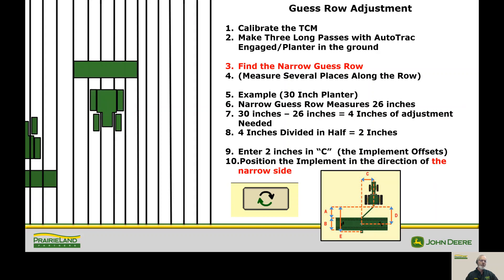Long passes. Passes that are long enough to where the auto track will stabilize. Once you've done that, what I want you to do is to have the narrow guess row be what you put your attention on. So it's right here. Go and measure several places along the row. This is going to give you a bit of an average to give you an idea just what kind of guess row. And I want you to always go with the narrow guess row.